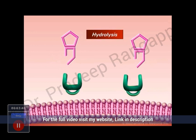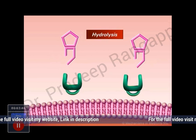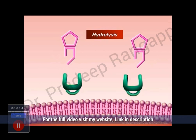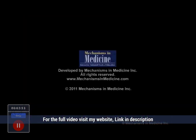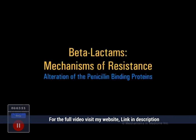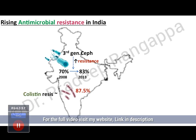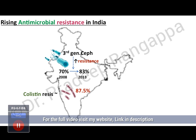Ultimately, the destruction of the beta-lactam ring of the antibiotic renders it incapable of binding to the penicillin-binding protein, and thus the bacteria become resistant to that drug or class of drugs. This is a very good video to understand how resistance works in organisms. Those mechanisms are extremely important to be a little sensitive as to how resistance develops.